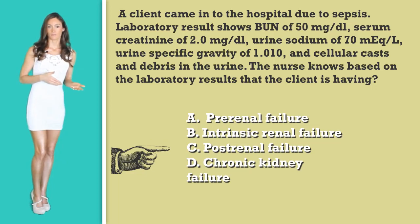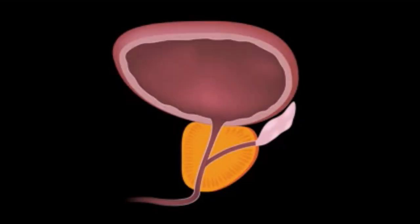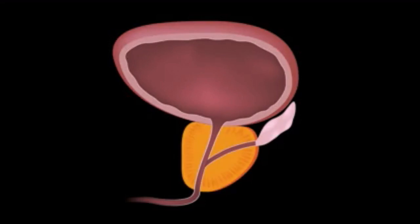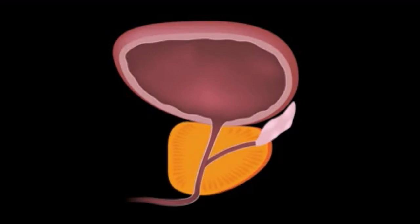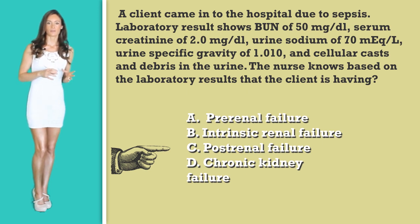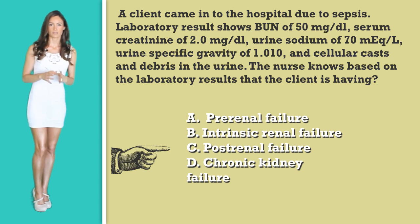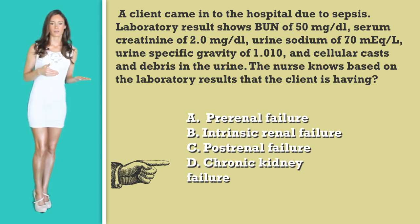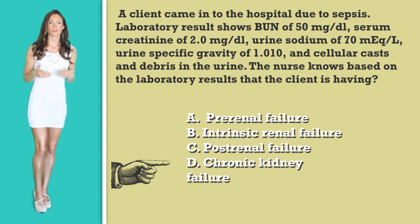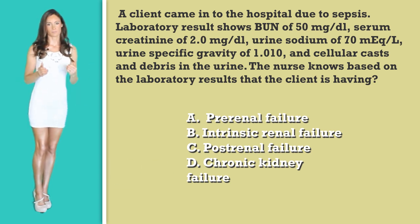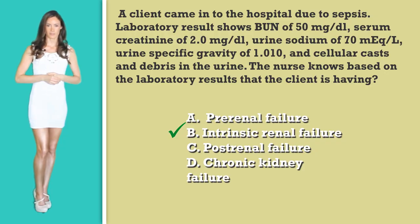Option C, post-renal failure, is caused by something obstructing the urinary tract or ureters, such as a tumor, enlarged prostate, or kidney stone. However, these lab values are indicating intrinsic — or within the kidney — failure. Option D, chronic kidney failure: even though the BUN and creatinine levels are elevated, they are not extremely high as you usually see with chronic renal failure. Making the final answer option B: intrinsic renal failure.